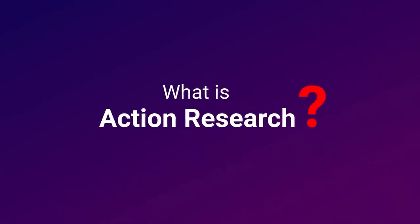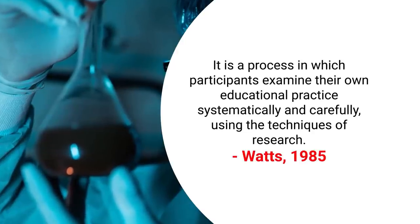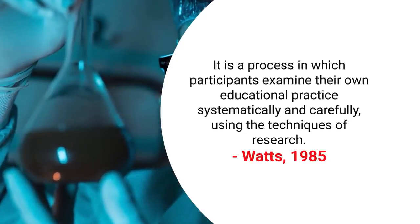And because it follows the steps of scientific methods, it is very systematic and is being done during the action. That's why some people call it action science. In order to define action research, many practitioners have tried to define it in different ways. The first such definition was given by Watts in 1985, which says that action research is a process in which participants examine their educational practices systematically and carefully using the techniques of research.